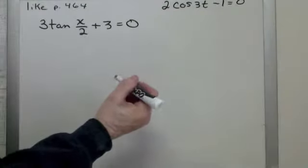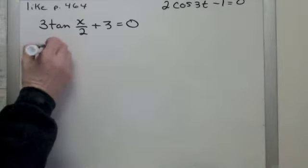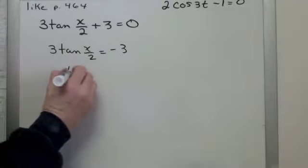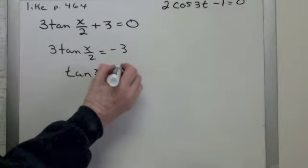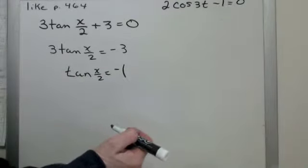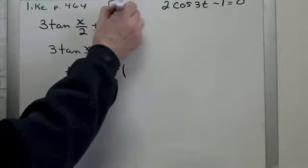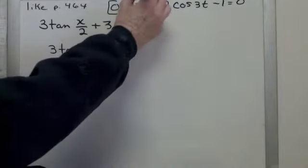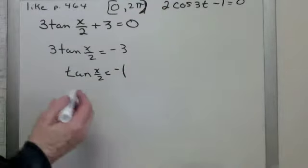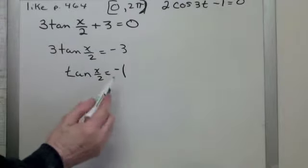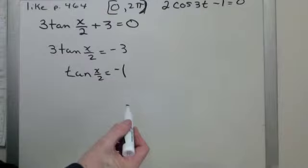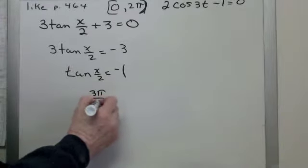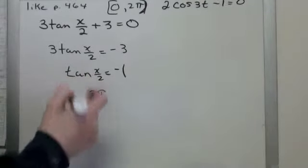All right, here's another one similar to the 2 cosine 3t minus 1. First thing to do, subtract 3 from both sides. So, 3 tangent x over 2 equals negative 3. How about divide by 3? So, tan x over 2 equals negative 1. Then, you have to look on the interval from 0 to 2 pi, and we're not including 2 pi because that's all the way around again. So where does the tangent of some value equal negative 1? The only value is 3 pi over 4.